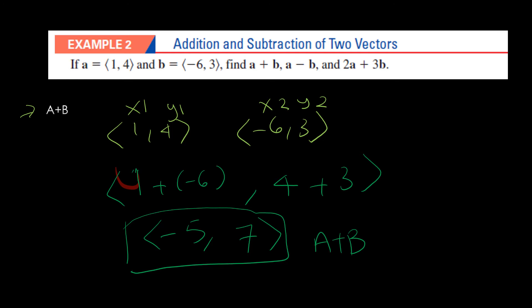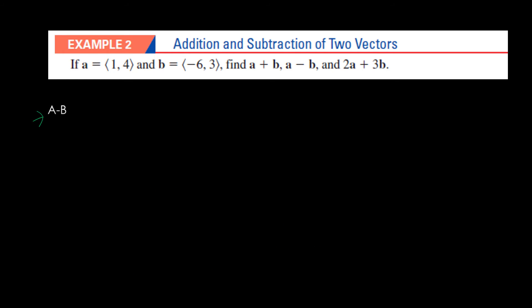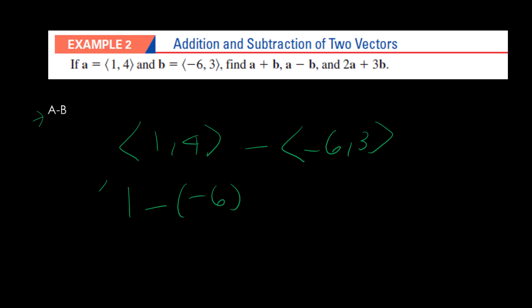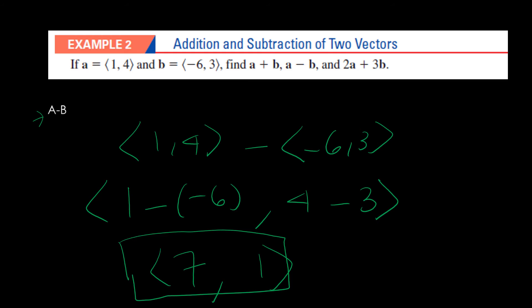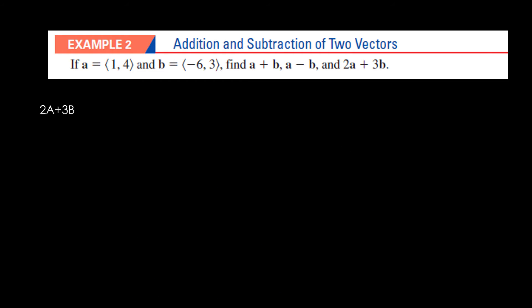Now let's move on to a minus b. For a - b, we do 1 - (-6) and 4 - 3. One minus negative six is 1 + 6 = 7, and 4 - 3 = 1. So a - b = (7, 1).